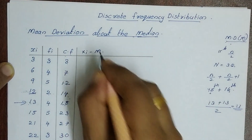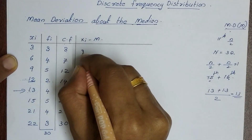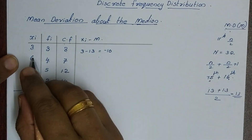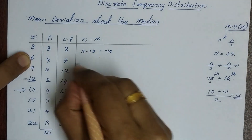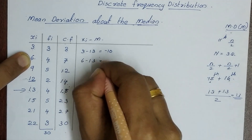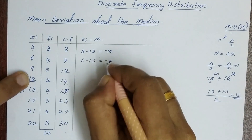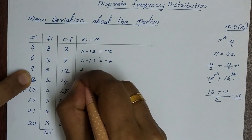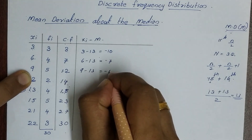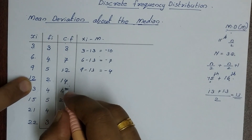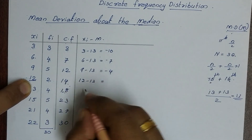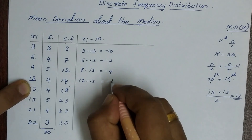Now we compute the deviations. That is: 3 minus 13 equals minus 10. Then 6 minus 13 equals minus 7. Then 9 minus 13 equals minus 4. Then 12 minus 13 equals minus 1.